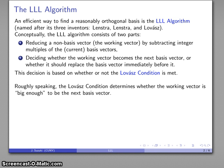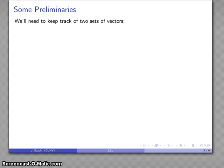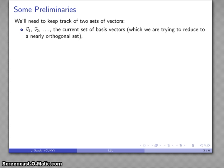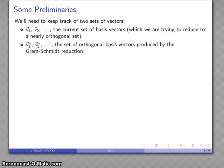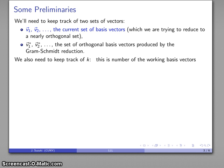Roughly speaking, what the Lovász condition does is it determines whether our working vector is big enough to be the next basis vector. As preliminaries, we need to keep track of two sets of vectors: our current set of basis vectors, which we're trying to reduce to a nearly orthogonal set — think of this as a provisional set — and also the set of orthogonal basis vectors obtained using Gram-Schmidt reduction. We also need to keep track of k, the number of the working basis vector we're currently reducing.